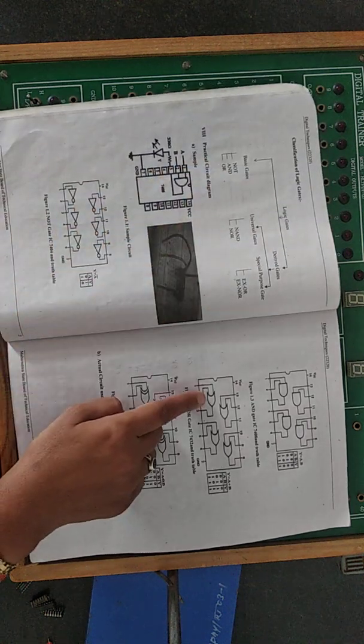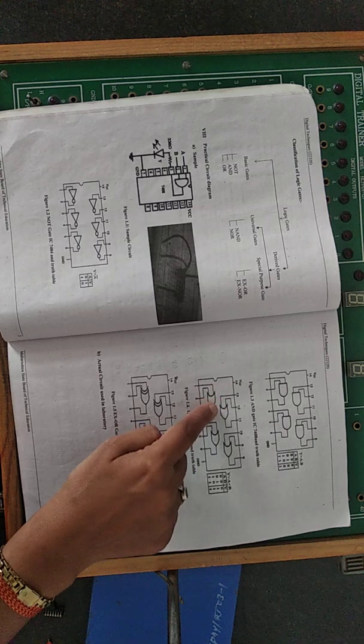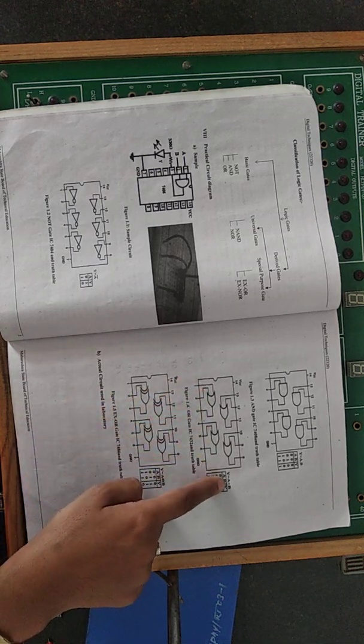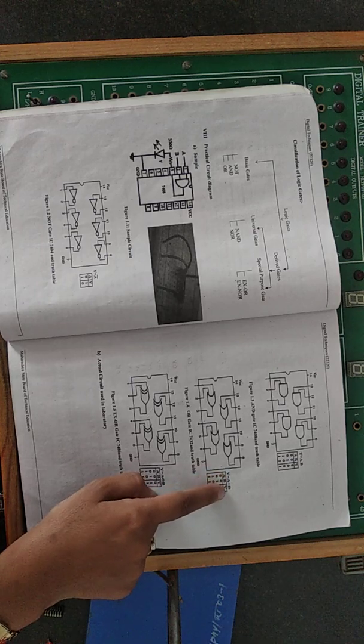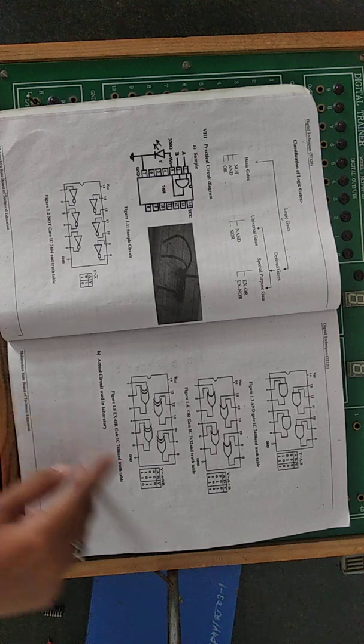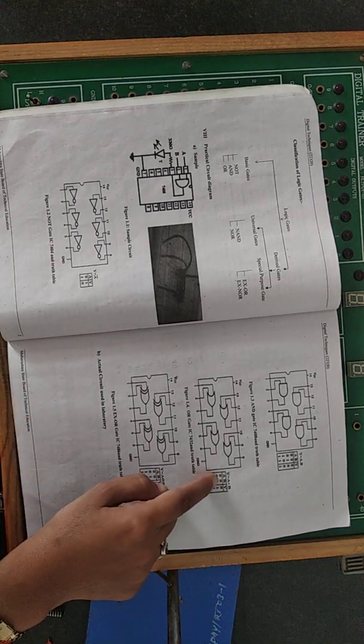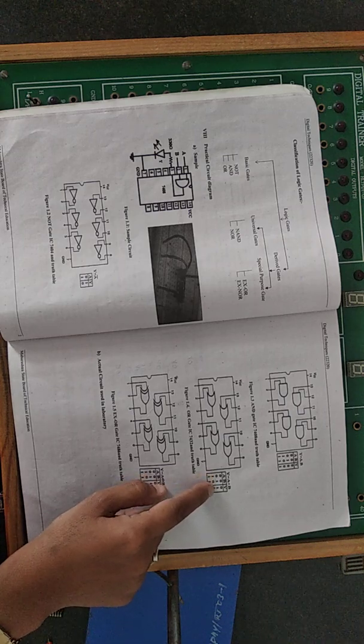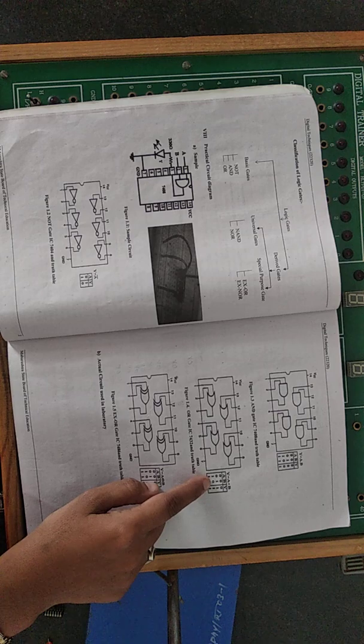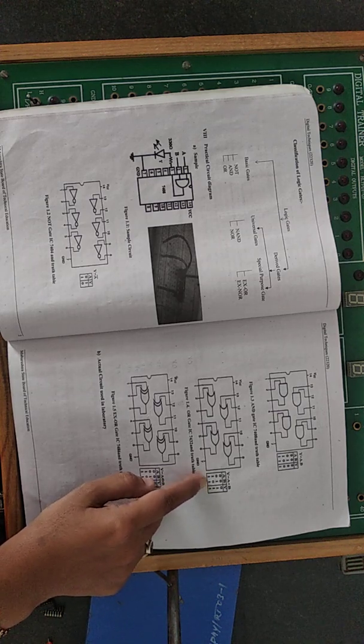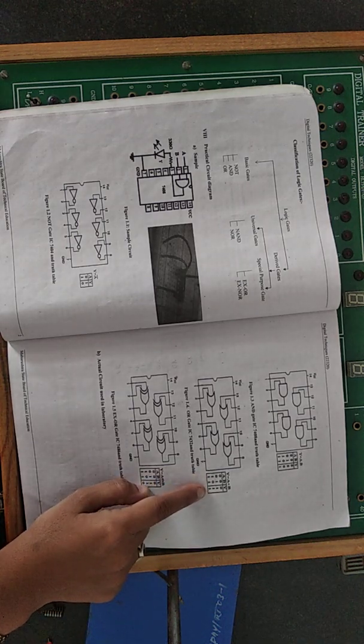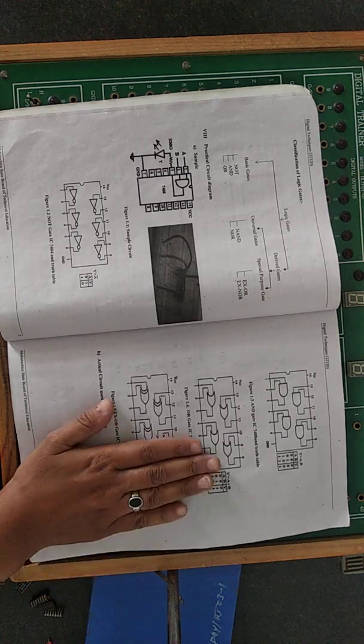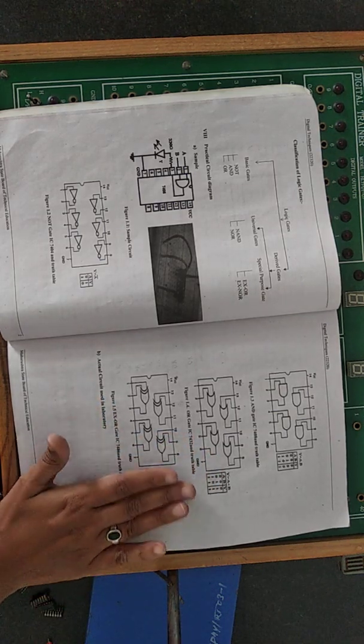Third basic gate is OR gate. OR gate symbol is a curve. If A is 0, B is 0, Y is 0 because 0 plus 0 is 0. If A is 0, B is 1, output is 1 because 0 plus 1 is 1. If A is 1, B is 0, output is again 1. And if A is 1, B is 1, output is 1. Here there might be some confusion. It may seem like 1 plus 1 should be 0 carry 1, isn't it? That is binary logic.